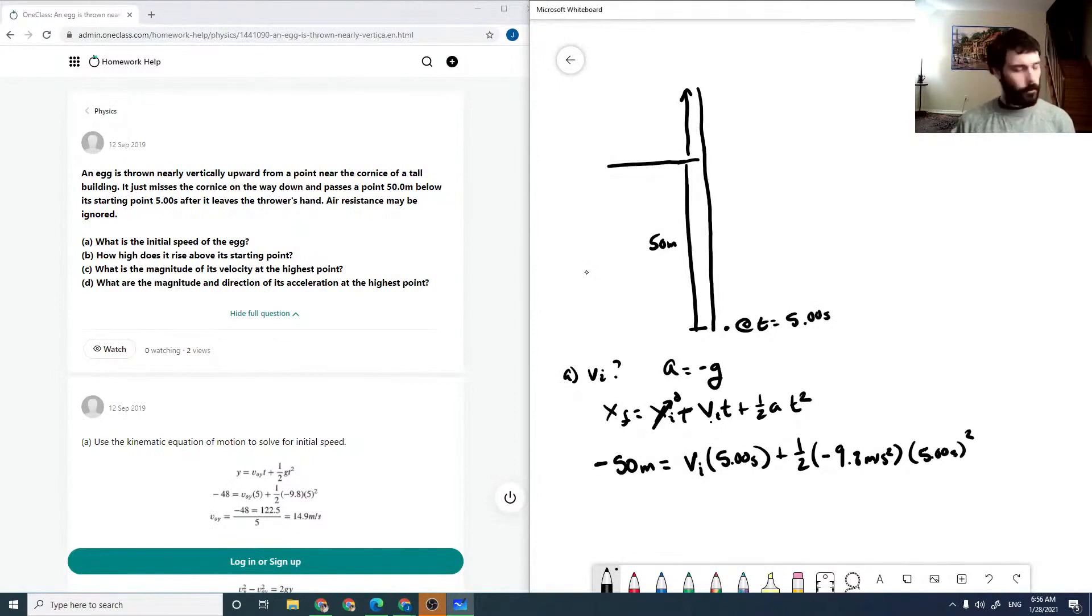And so our vi is minus 4.9 meters per second squared times 5 seconds squared minus 50 meters all over 5 seconds, which is equal to 14.5 meters per second. So there's our initial speed.